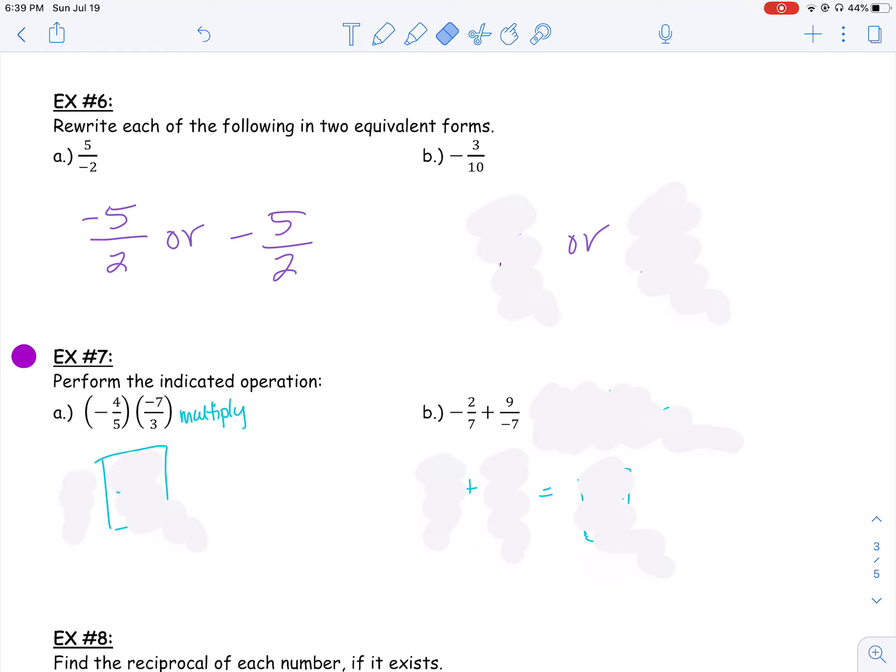Or on B, if I have a negative in front and I have 3 tenths, negative 3 tenths, I can write that as a negative 3 over 10, or I can write that as a 3 over negative 10, and it would still be the same value. All right, make sure that you practice some of that stuff, and then we'll do our last video here in a second, covering the rest of the examples for section 1.7.